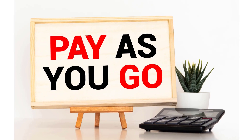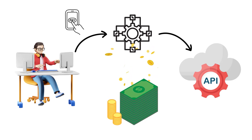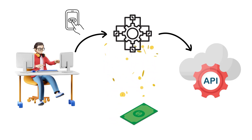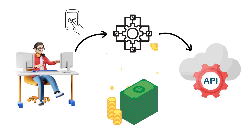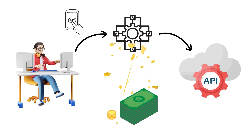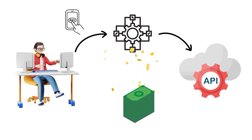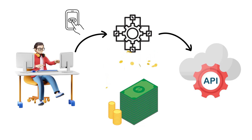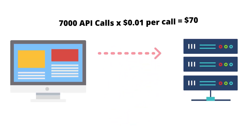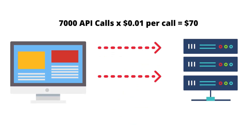Let's take a close look at the very well-known metered billing, or pay-as-you-go charge type, sometimes called the usage-based payment model. With the metered billing model, API consumers can make as many calls as they want per month and you only charge the consumer a fee for each API call they make. If the consumer makes 7,000 API calls at 1 cent per call, then the bill at the end of the month would be $70.